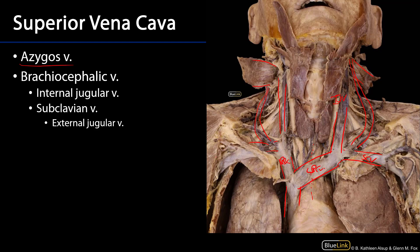Wherever the subclavian vein meets the IJ, we have what's known as the venous angle — there are right and left venous angles. These are important for understanding lymphatics, because it's in the vicinity of the venous angle that we have the lymphatic ducts, and sometimes the trunks independently, re-entering the vasculature and delivering lymph into the venous supply. This has been a high-level look at the major veins of the root of the neck for the thorax.